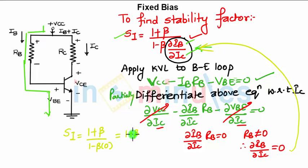Now what is Si? We have found the equation stability. Si is nothing but change in Ic with respect to change in Ico. This is 1 plus beta. That means for a small change in Ico, your Ic will change 1 plus beta times.